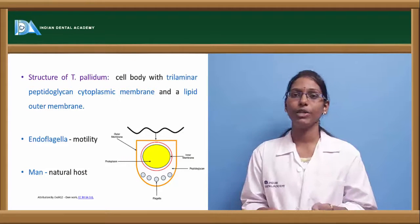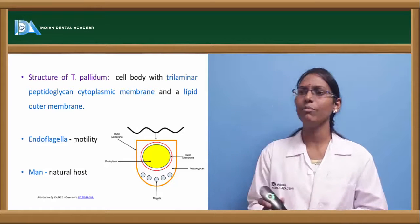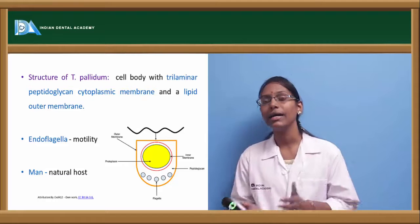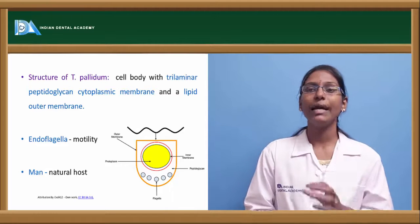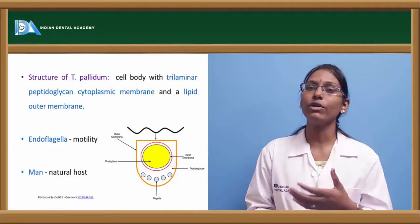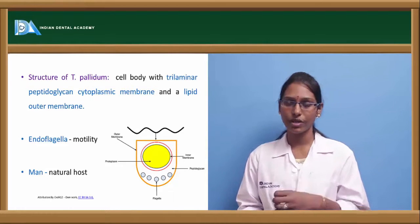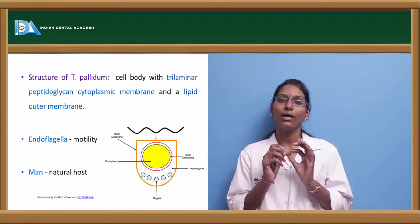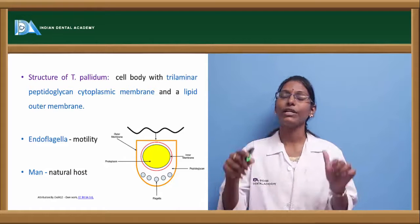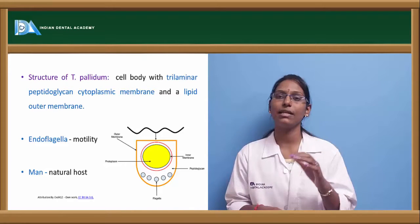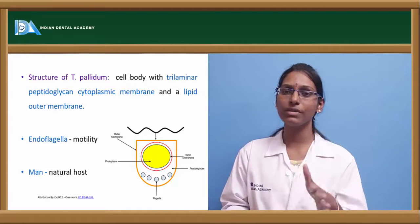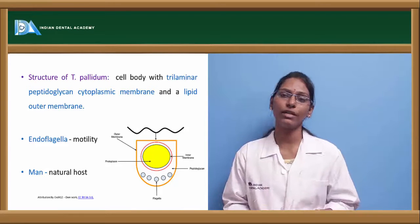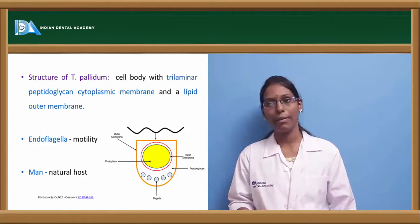The structure of Treponema pallidum includes a cell body with a trilamellar peptidoglycan cytoplasmic membrane and a lipid outer membrane. Treponema pallidum is a highly motile organism. It has a structure called endoflagella surrounding the outer membrane, which helps in the movement of this organism. The only known natural host for the spirochete Treponema pallidum is man.